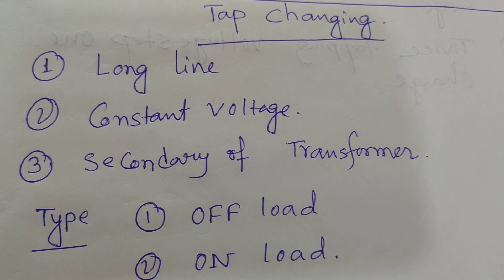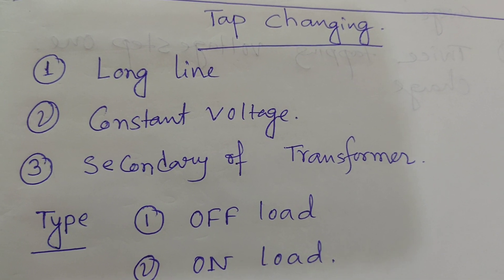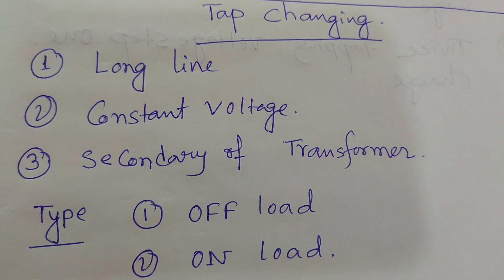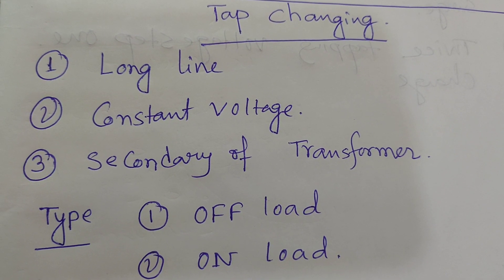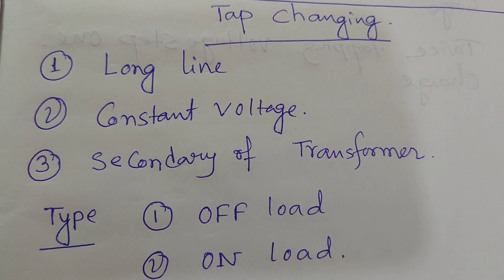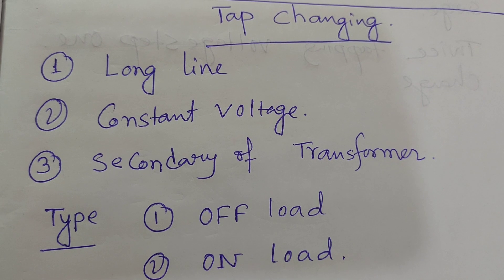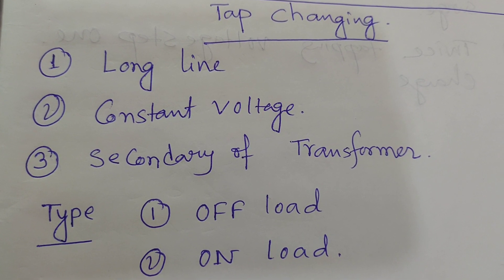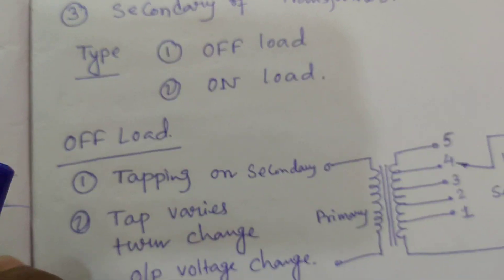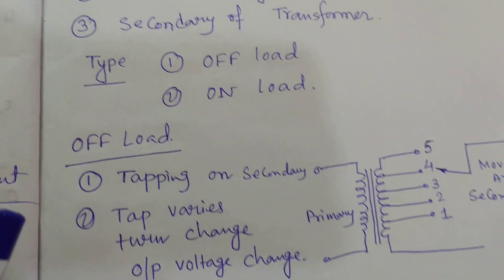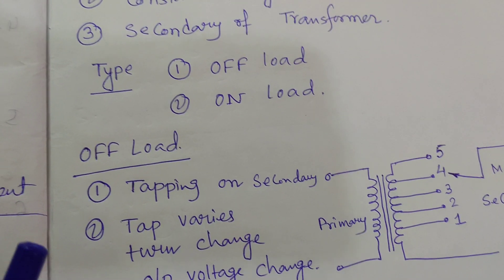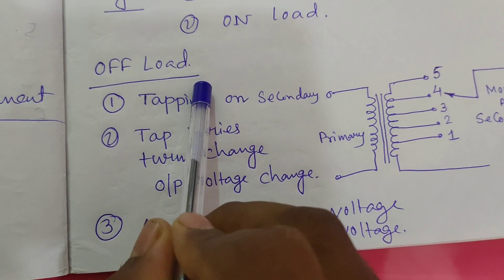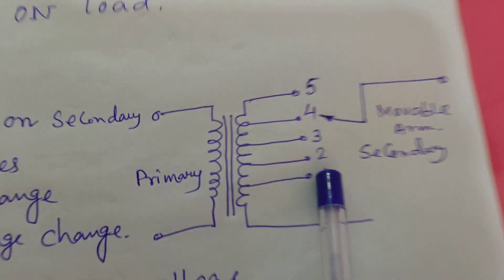We change the tap accordingly for our requirements. There are two types of tap changing methods: one is the offload tap changing method, and the other is the onload tap changing method. Offload means the load has been disconnected — the load will be disconnected when the tapping is changed. Let us discuss the offload tap changing method.